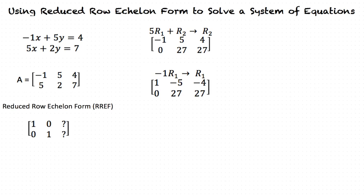We simplify the second row by multiplying it by the scalar 1 over 27. This gives us 1, negative 5, negative 4, row 2: 0, 1, 1.